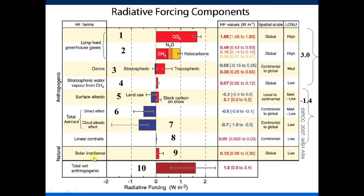Solar irradiance is natural — changes in the amount of radiation emitted by the sun are not influenced by humans. You might wonder about volcanoes: they are a natural internal forcing factor, but they're sporadic. It's hard to quantify the net change in volcanic eruptions from 1750 to 2000 overall. We know they tend to cool in general, but we don't have a precise radiative forcing number for them due to their irregular timing.